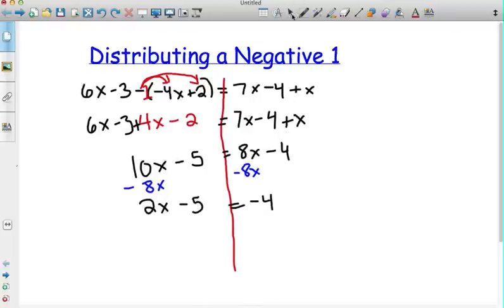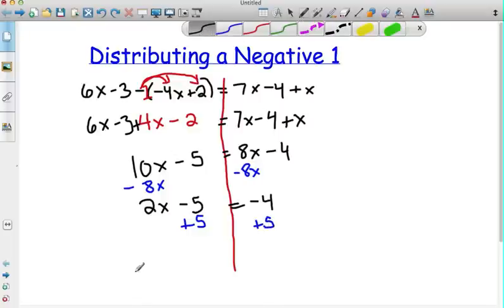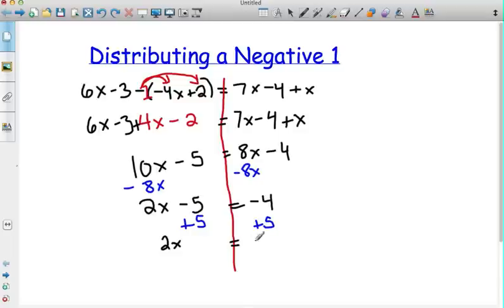But on this left side then I am left with 2x minus 5 equals a negative 4. Next up we're down to our two-step equation. Two steps until we are done. Add 5 plus 5 and we have 2x is equal to one whole. And then we need to get rid of this 2. Instead of multiplying by 2 we're going to divide. Divide on both sides.